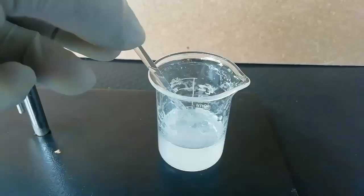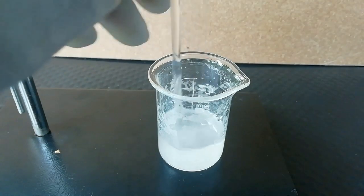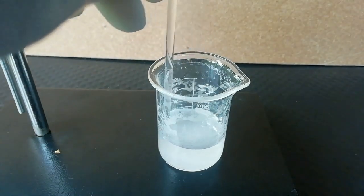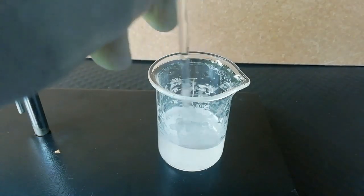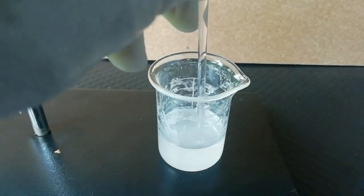To prepare the dimethylglyoxime solution, I dissolve 0.5 grams of DMG in ethanol because DMG is not very soluble in water.